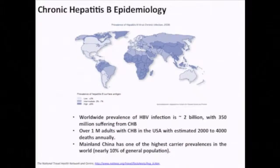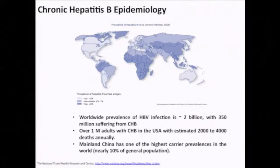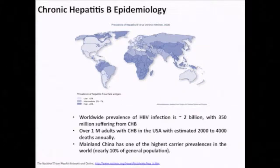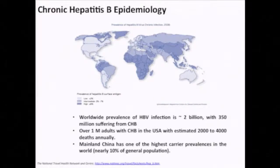When we look at our target diseases in the United States, the first major disease worldwide is chronic hepatitis B. There are two billion people in the world infected with hepatitis B — about 40% of the entire world population. In the United States there are fewer, but still one million people. And mainland China has a vast number of people with hepatitis B.